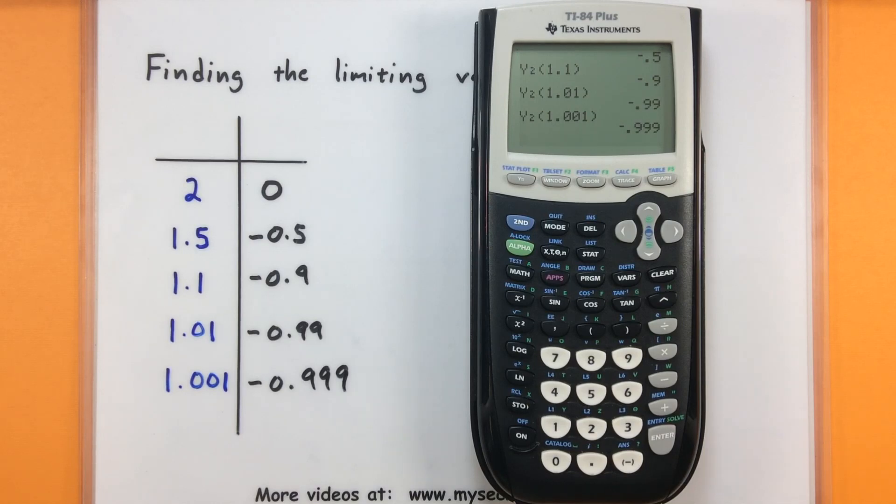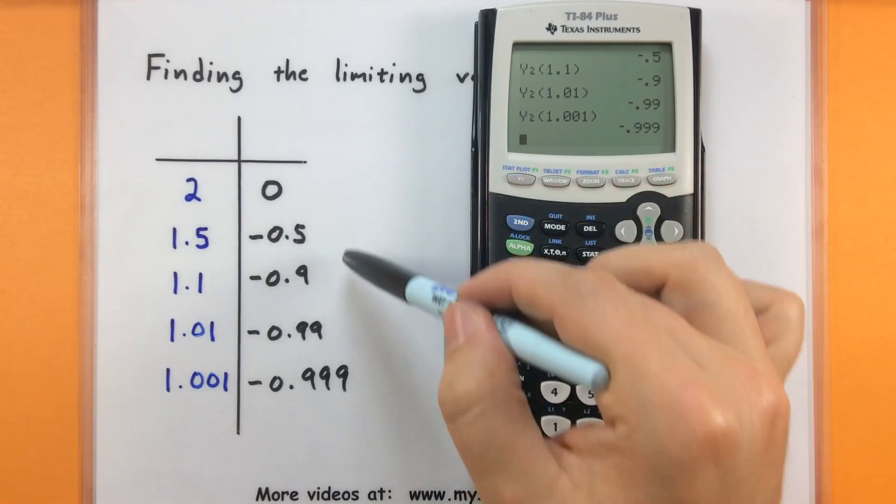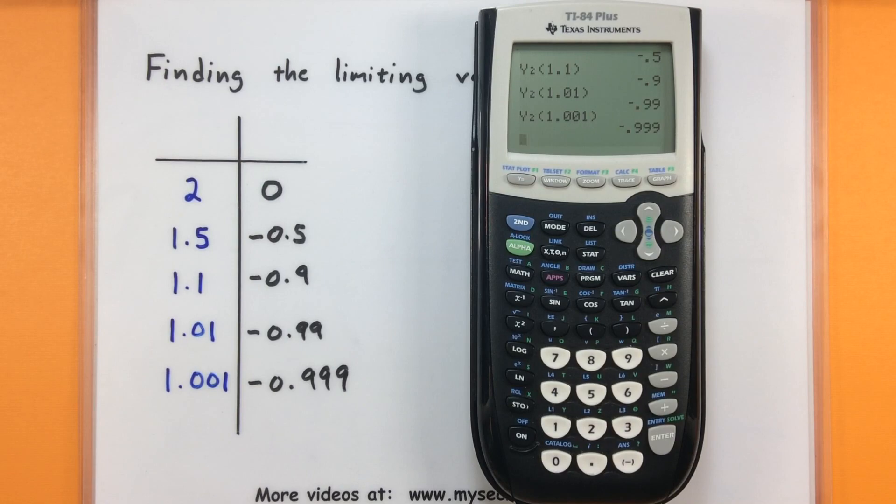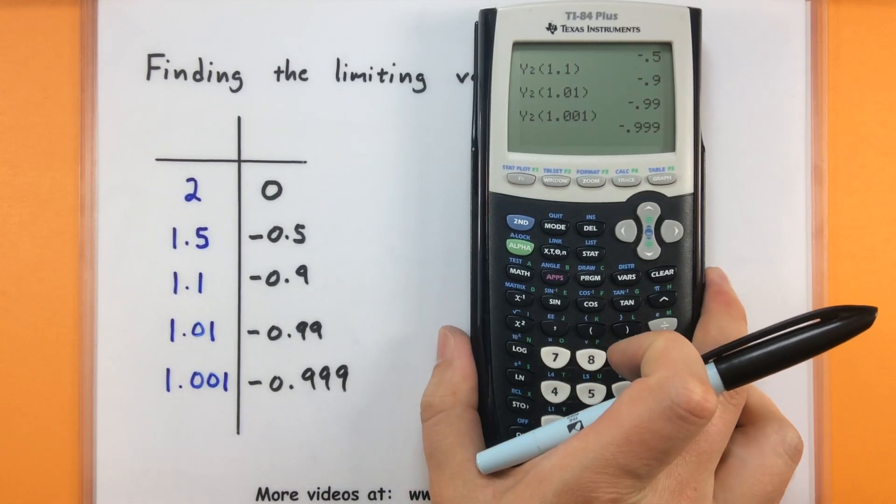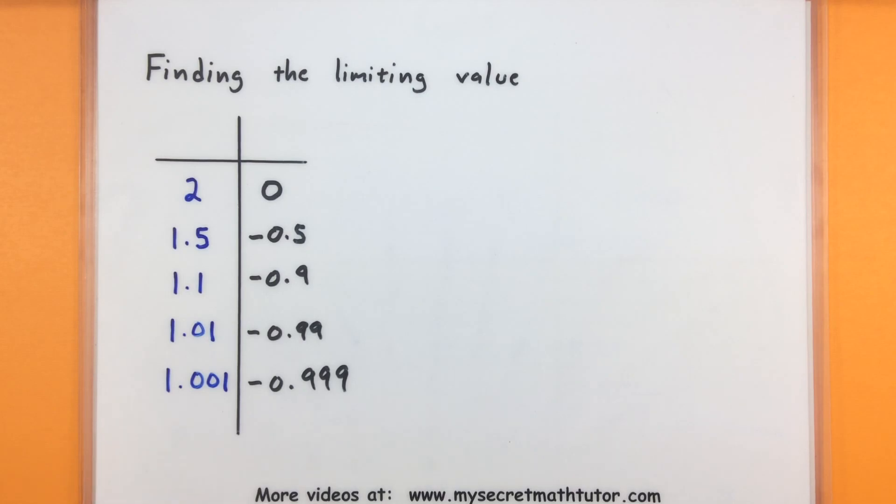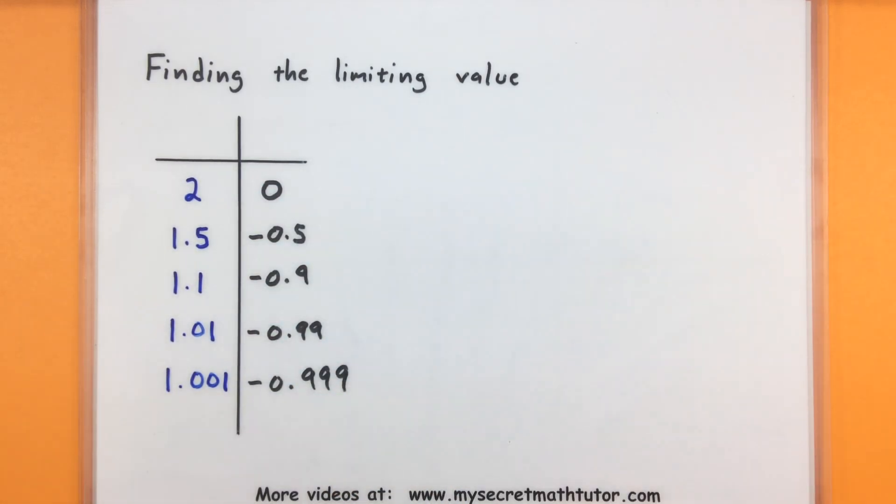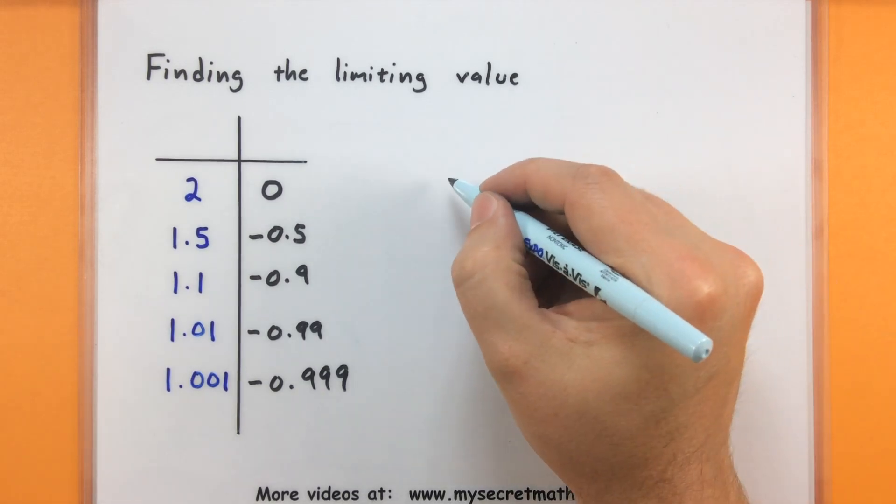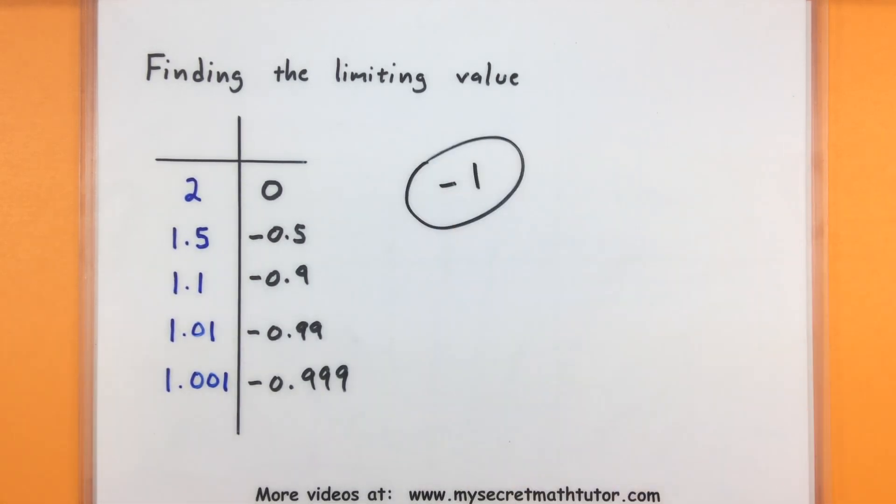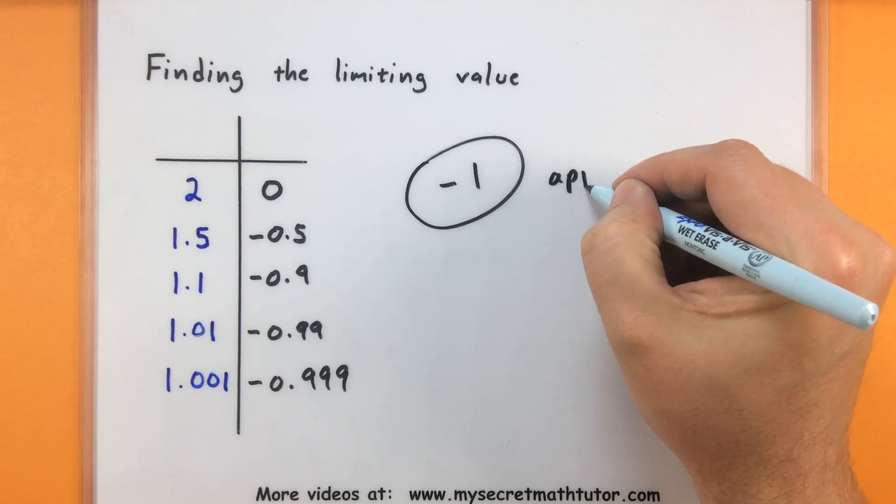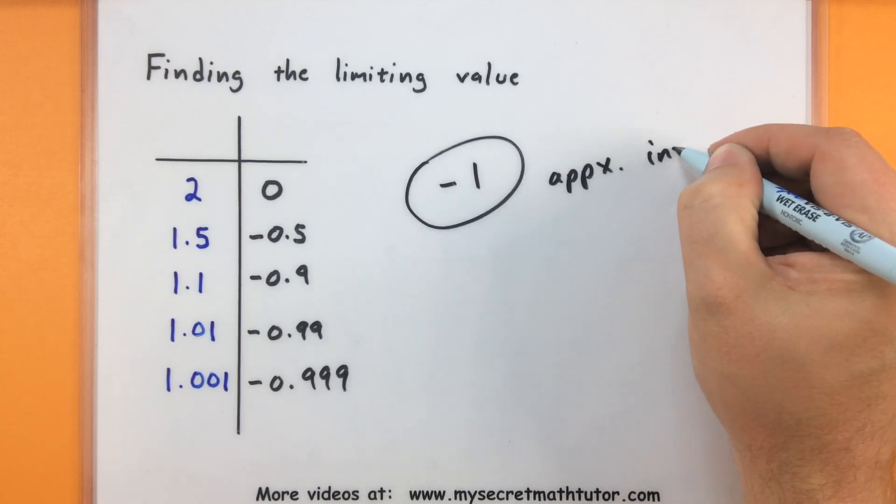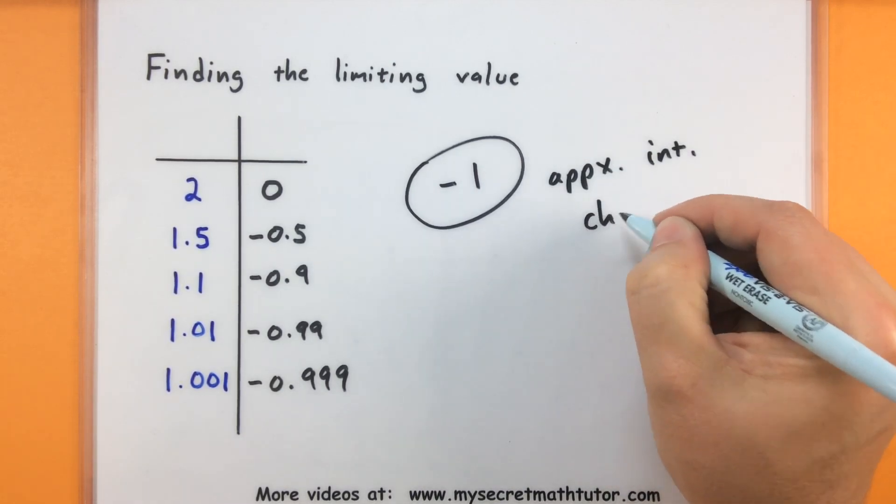So you can see the calculator is quickly finding the value of the slope between those two points, making it nice and easy on me. And now all I have to do is look at these slopes and say, does it look like they're getting close to anything? Does it look like they're getting close to some sort of limiting value? For our slopes, as we get closer and closer to one, the slopes look like they're getting closer to negative one. So I will say that that is my limiting value, and it's my approximation to the instantaneous change of the function at that point.